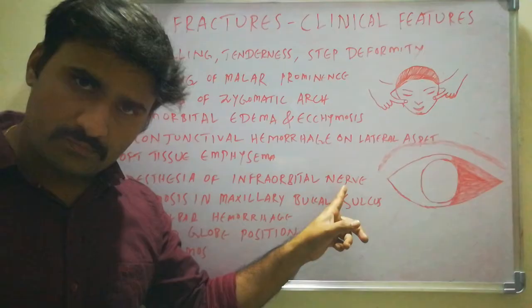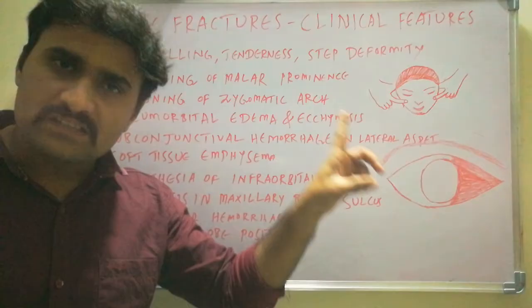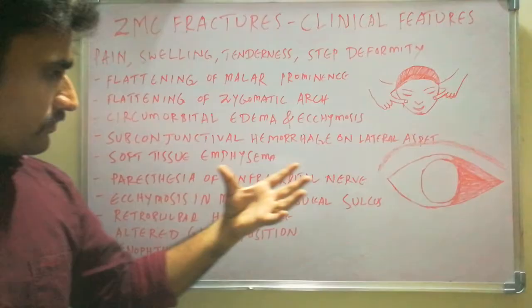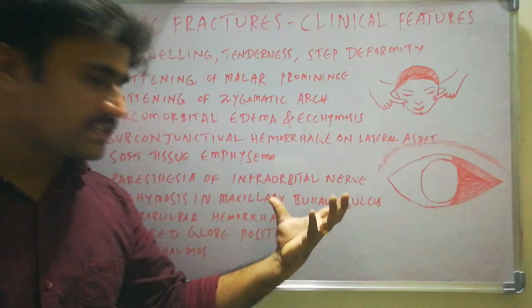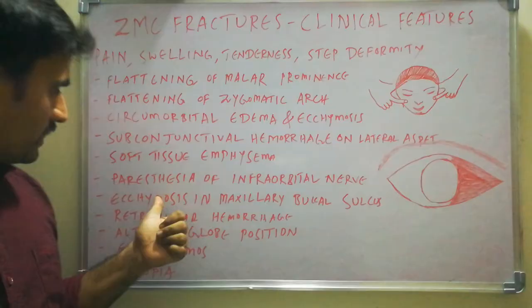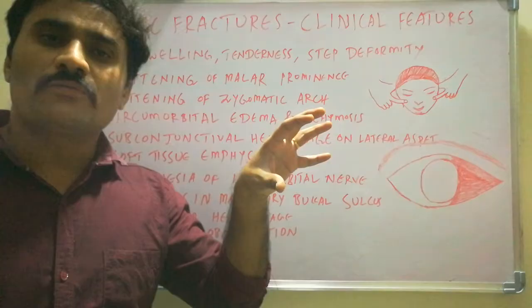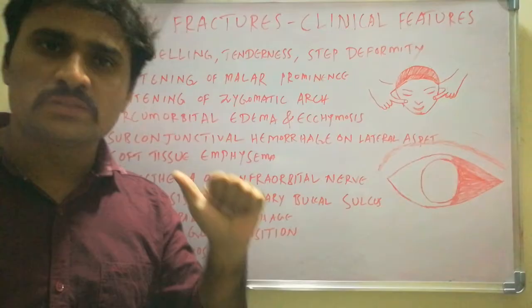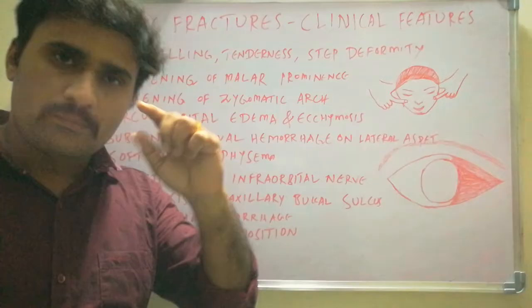Paresthesia of the infraorbital nerve occurs because the fracture runs through the zygomaticomaxillary suture or may involve the infraorbital foramen. Any compression or rupture of the infraorbital nerve produces paresthesia, which may be temporary or permanent. Ecchymosis in the maxillary buccal sulcus region denotes fracture of the zygomaticomaxillary buttress, visible from inside the oral cavity.